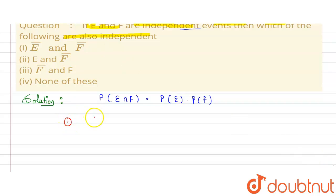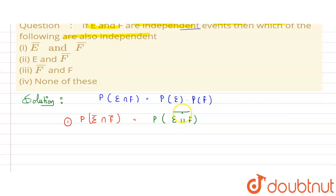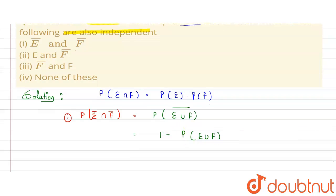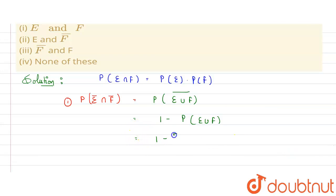For the first option, we need to check whether E complement and F complement are independent events. P(E' ∩ F') can be written as P(E ∪ F) complement, because by De Morgan's law, E complement intersection F complement equals (E union F) complement. This equals one minus P(E ∪ F).